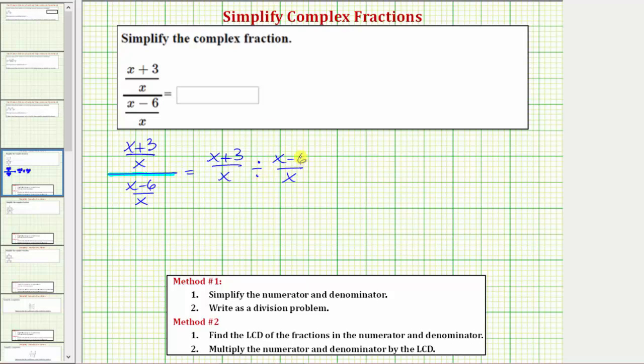We know dividing by this fraction is equivalent to multiplying by the reciprocal, and therefore we'll now write this division problem as a product. The first fraction stays the same, and then instead of dividing by this fraction we multiply by the reciprocal, so we'd have times x divided by the quantity x minus six.